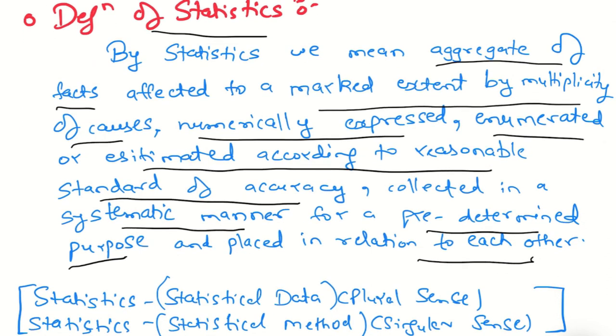There is a very big definition, but in this definition everything related to statistics is covered. So let's understand it deeply. By statistics, we mean aggregate of facts. Aggregate of facts means data, actual reality.